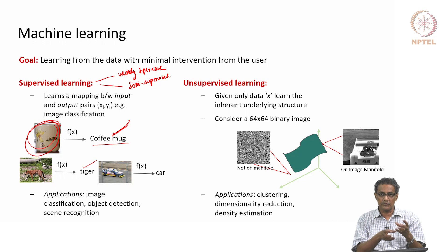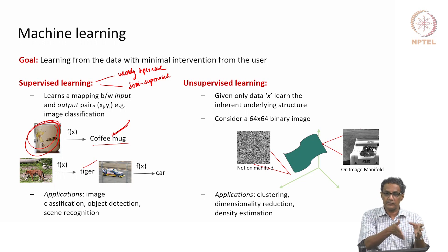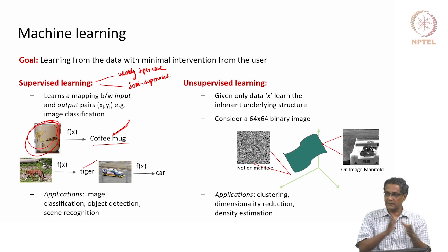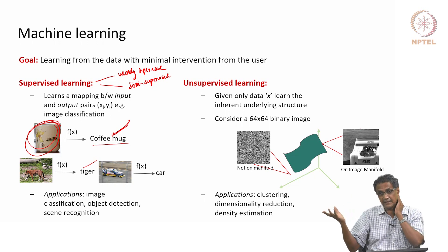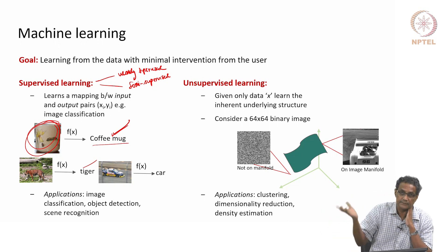It is weak because you do not have strong supervision — strong supervision means I know exactly that for this image that is the label. Whereas in weak supervision, there is a surrogate task which helps you solve the main task.